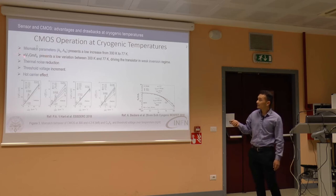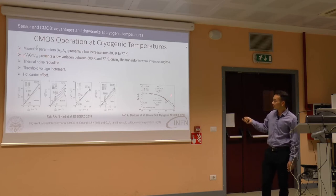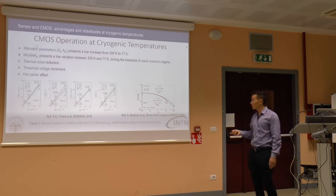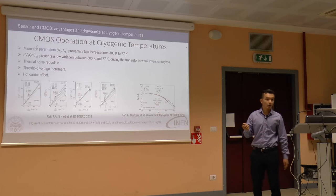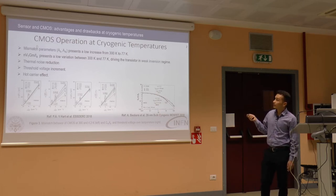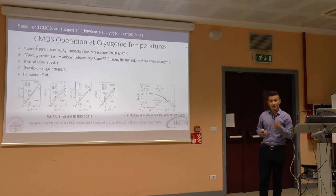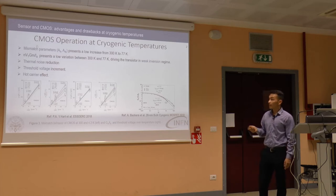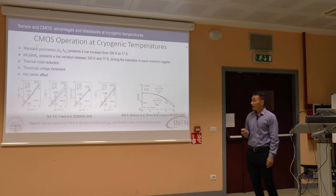Secondly, we have the normalized transconductance. This figure shows that the normalized transconductance has the same behavior or value at 77 Kelvin and 300 Kelvin if the transistors are biased in weak inversion — meaning with an inversion coefficient lower than one. Another advantage of cryogenic operation is thermal noise reduction: at 77 Kelvin we can obtain a reduction of around three times in high-frequency noise.